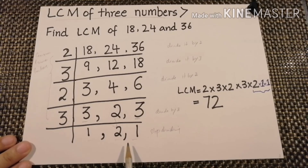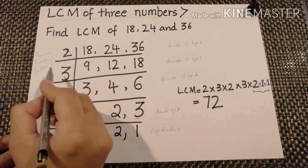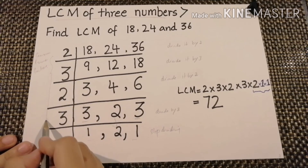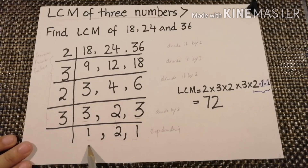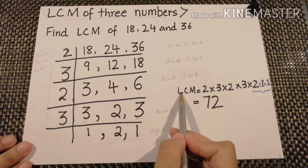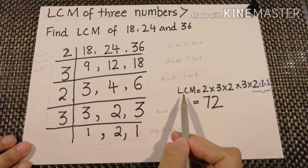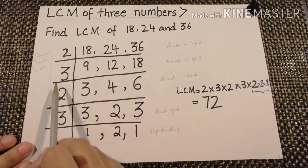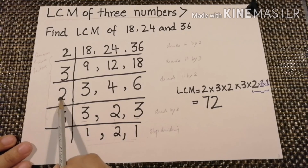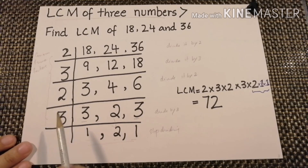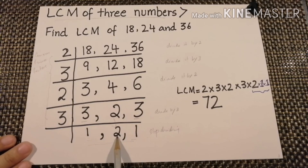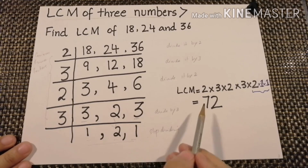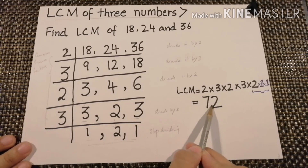Now how will we take the LCM? We multiply the common prime factors and the remaining factors. So the LCM of 18, 24, and 36 is 2 multiplied by 3, multiplied by 2, multiplied by 3, multiplied by 1, multiplied by 2, multiplied by 1. The answer is 72.